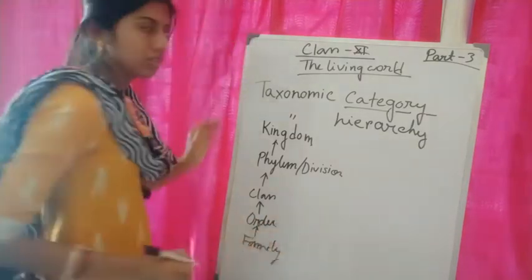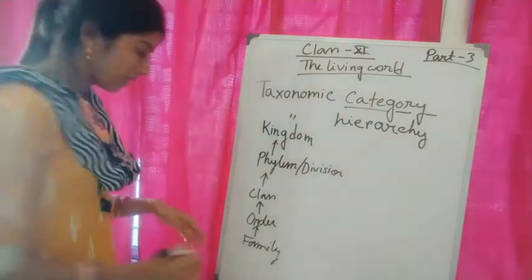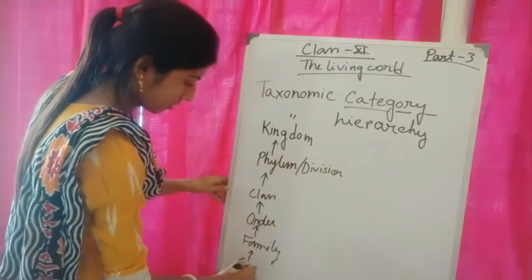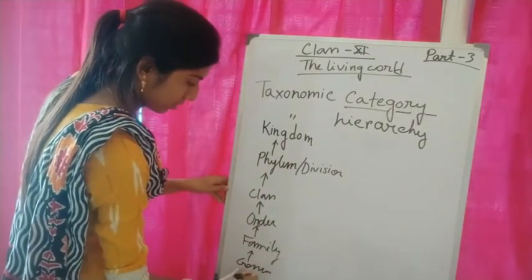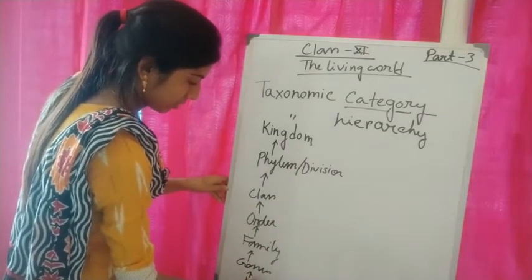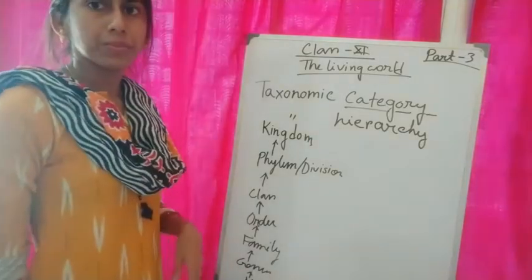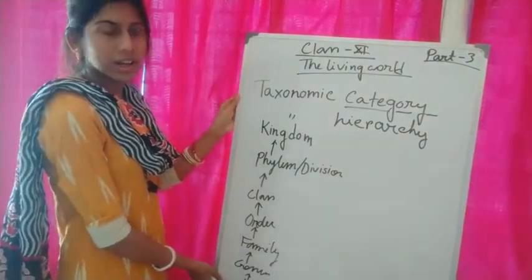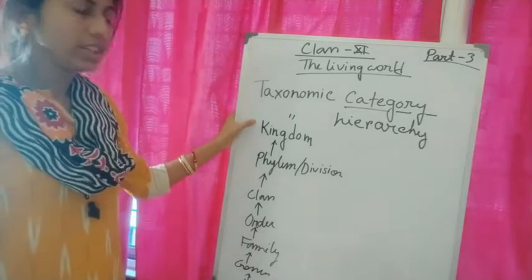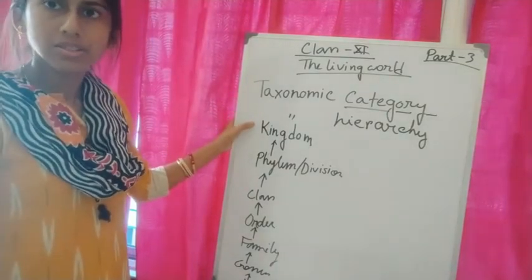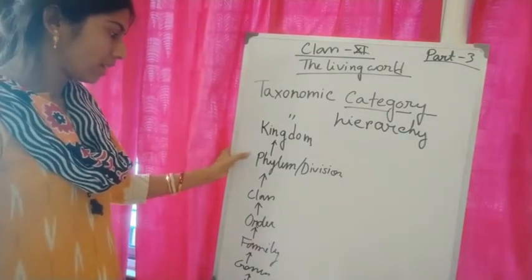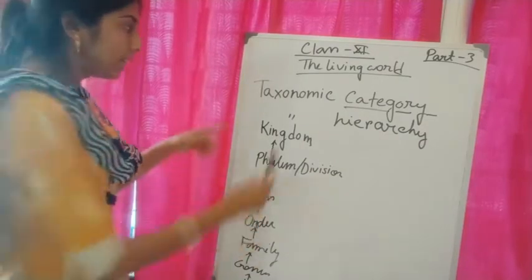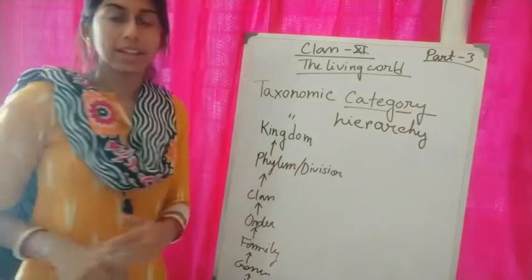These are the taxonomic hierarchy levels. They are: first of all, kingdom — the highest one — then phylum, class, order, family, genus, and species. These are all examples of a category.